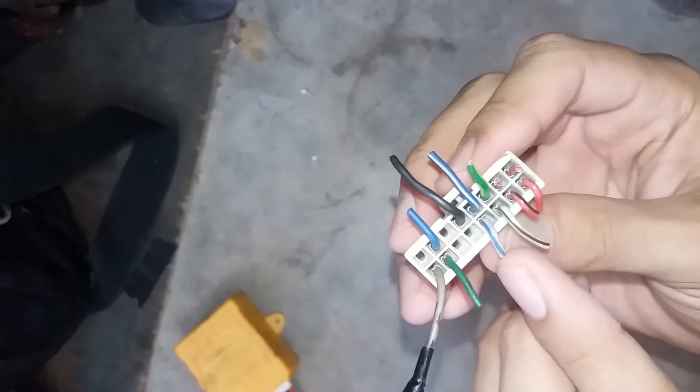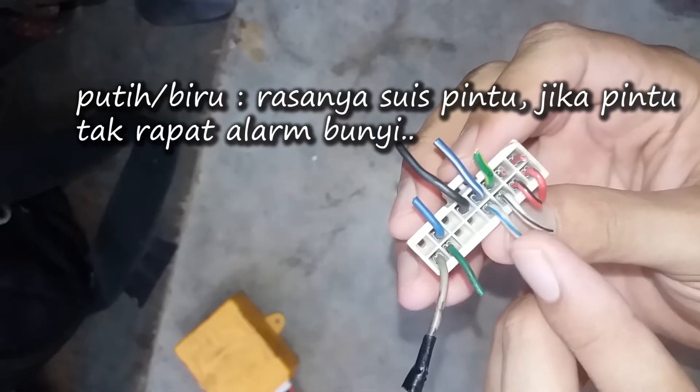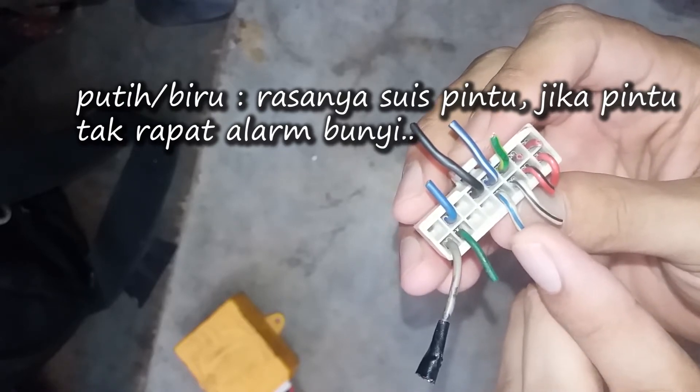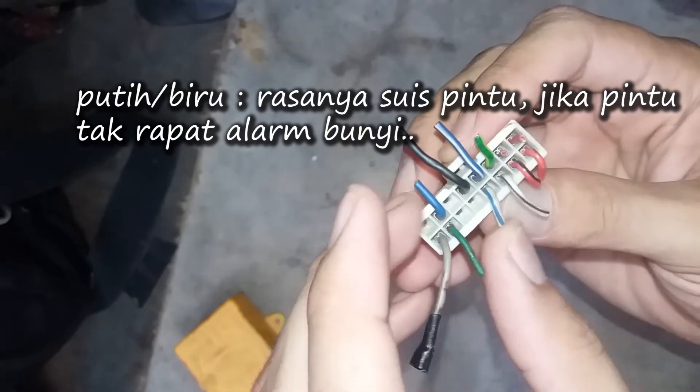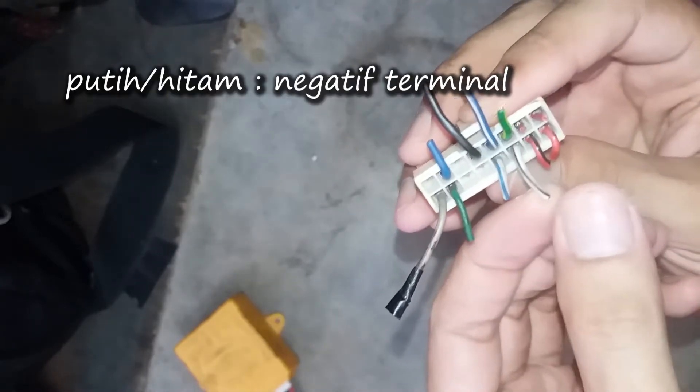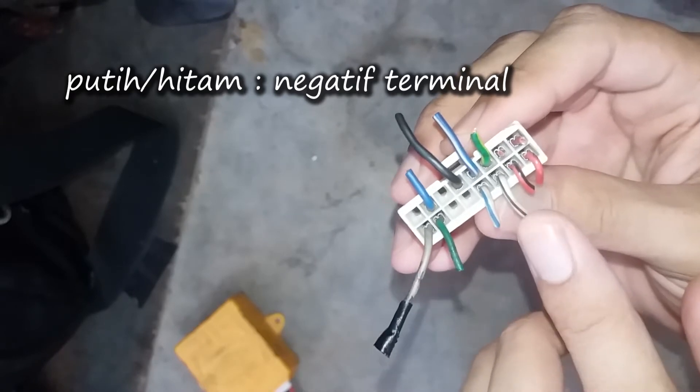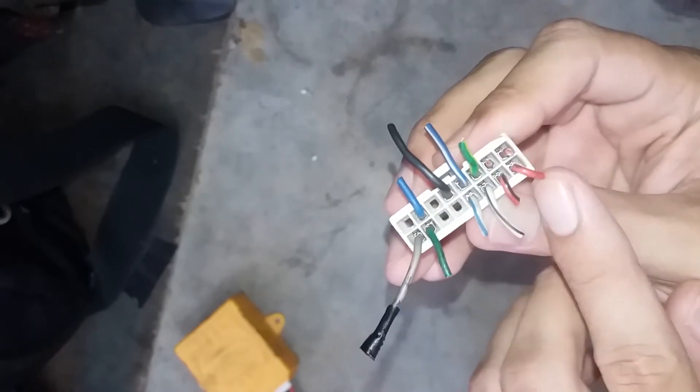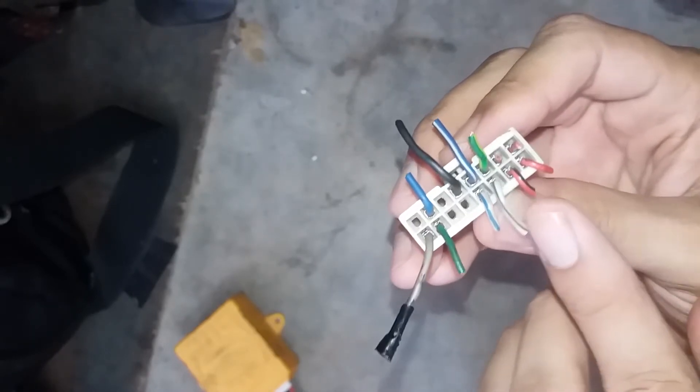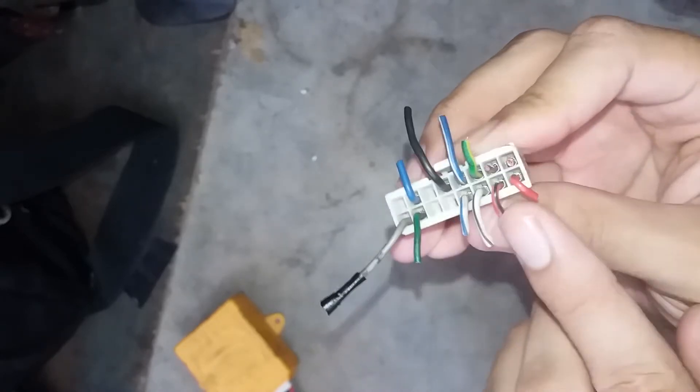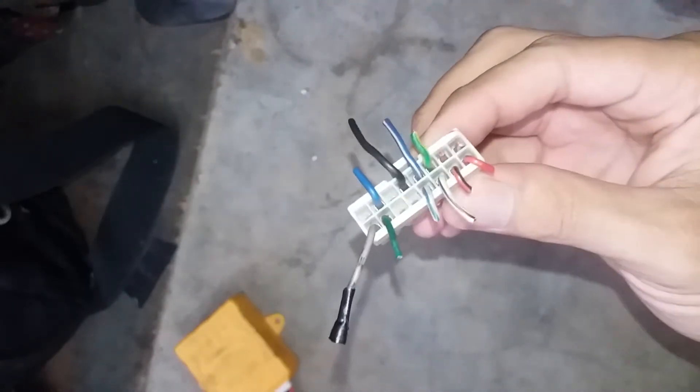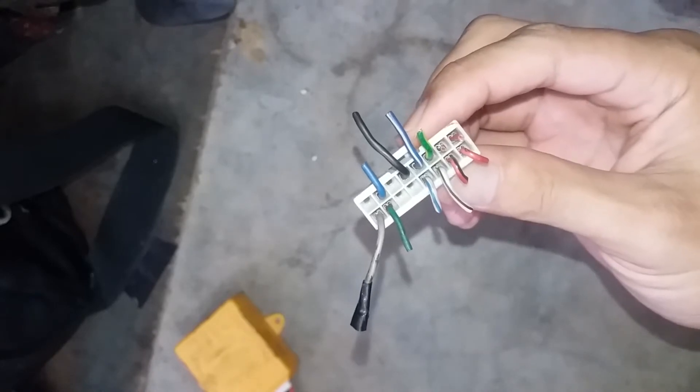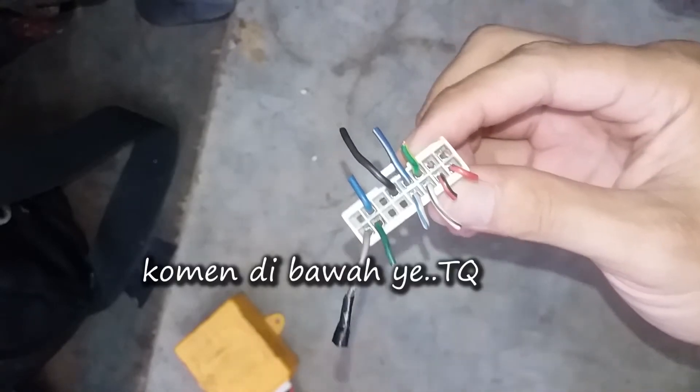Blue and white, I'm not sure what that is. White with black stripe is negative. Red with black and red, I'm not sure. Three wires I'm not sure about. I've tried searching on the internet and video clips but found nothing. If any friends know, please share or comment.